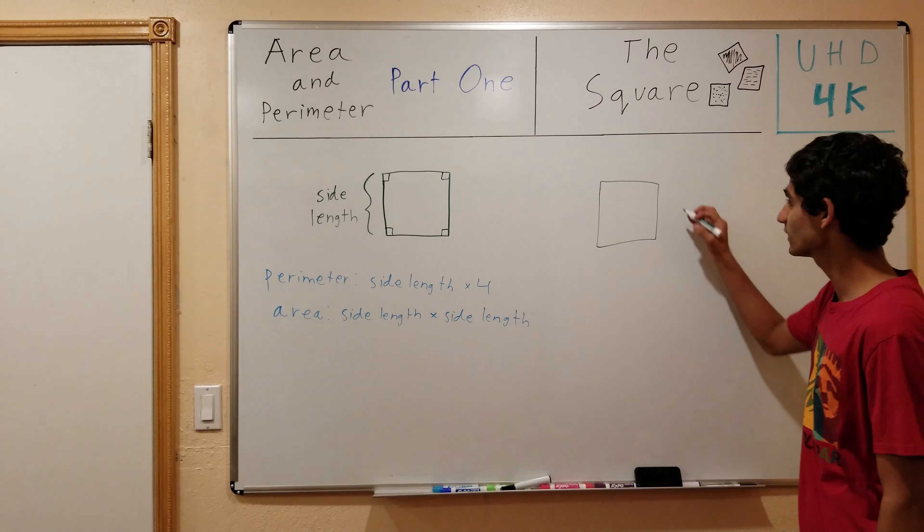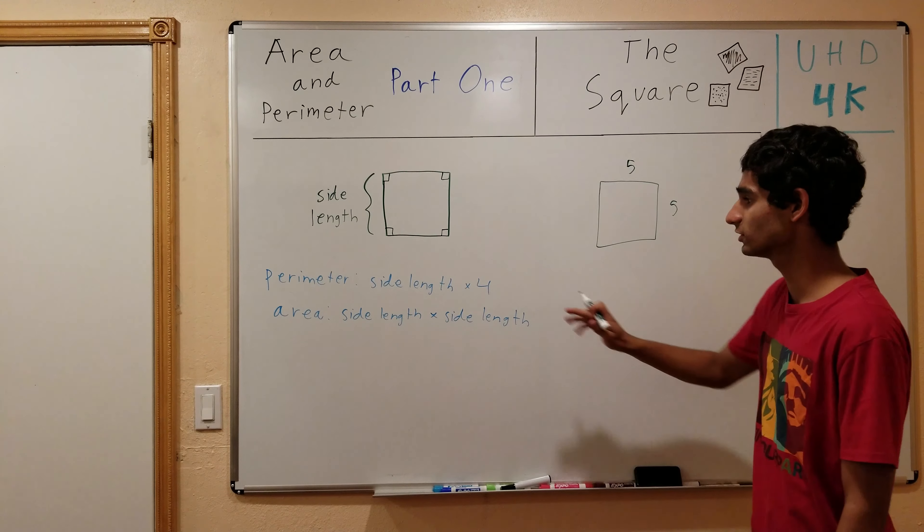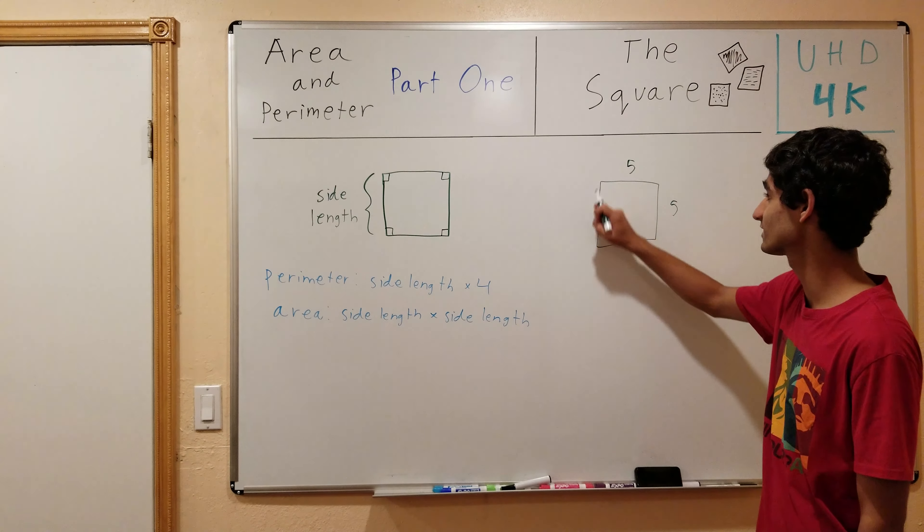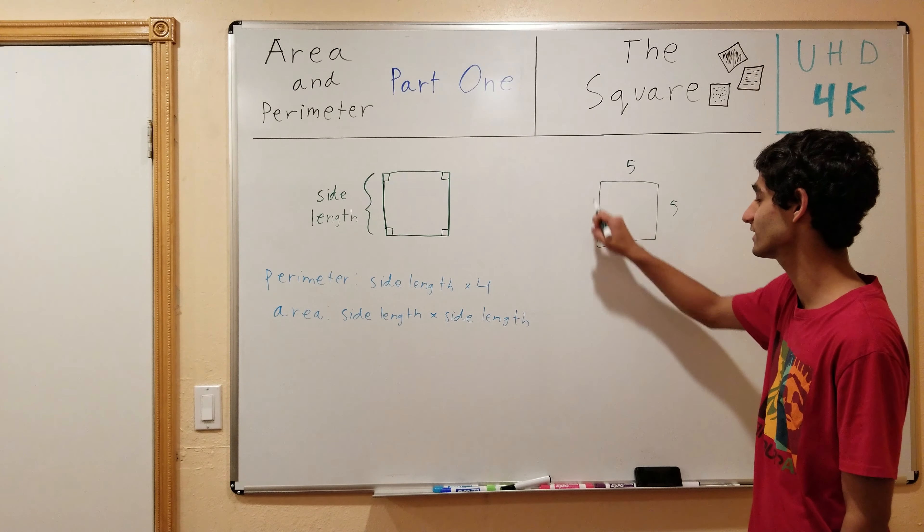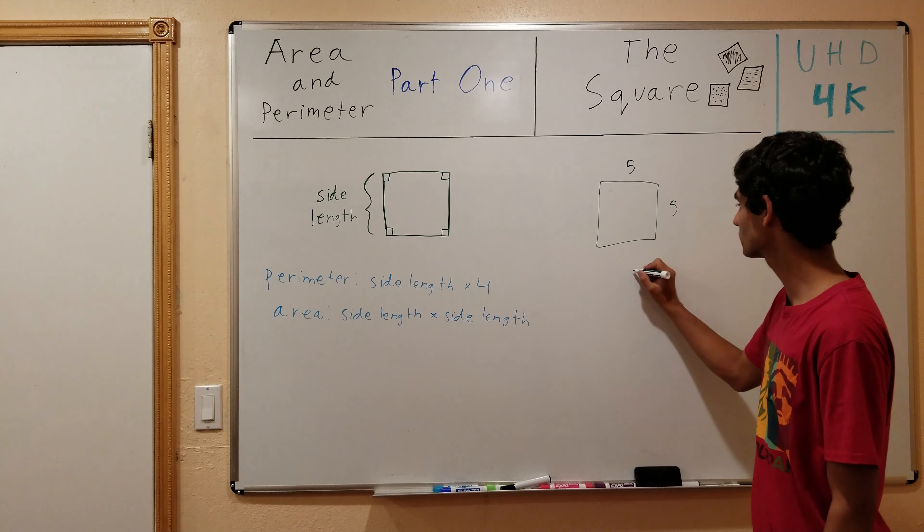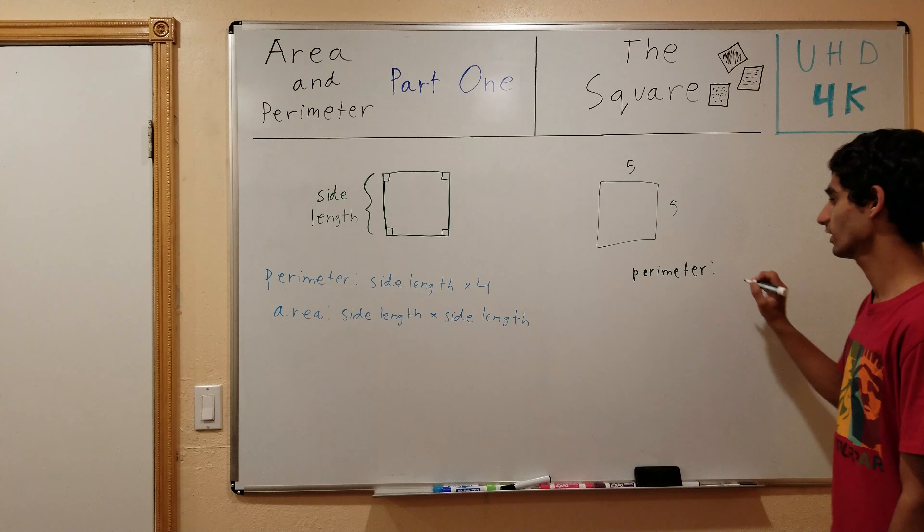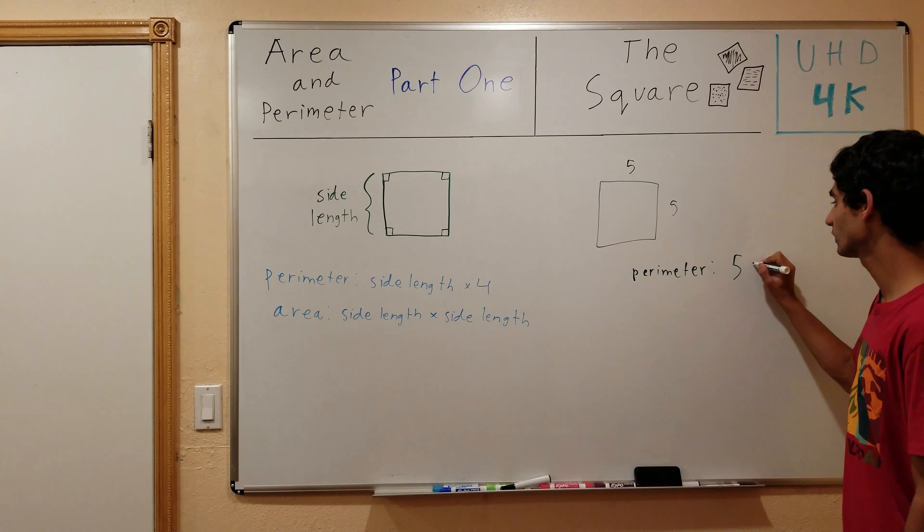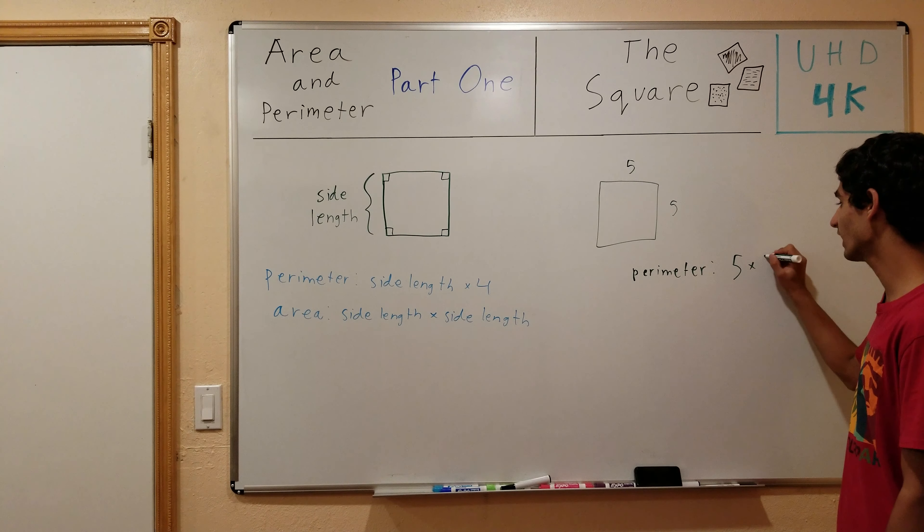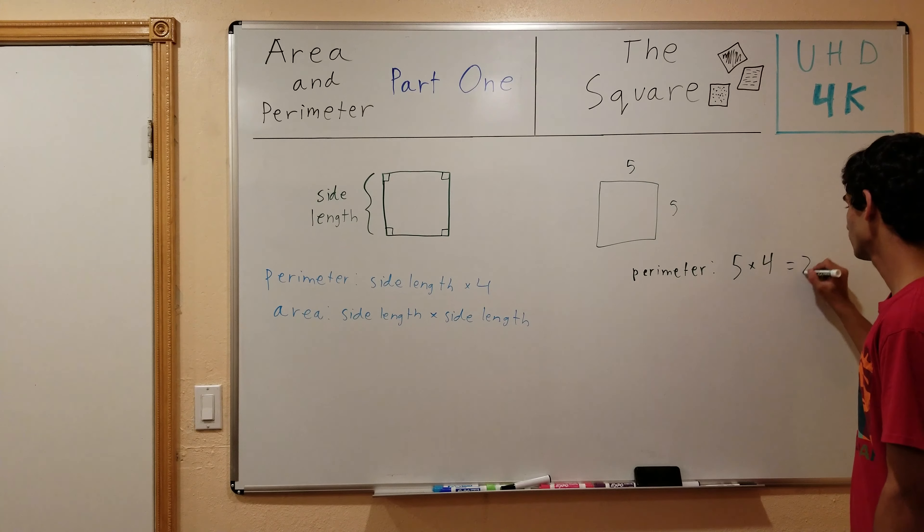The side length is 5. So the perimeter of the square, which is basically the sum of the length of the sides, the distance around the square is equal to 5, which is the length of the side, times 4. And what is that? 20.